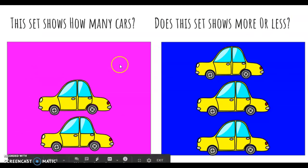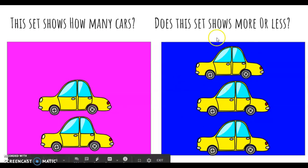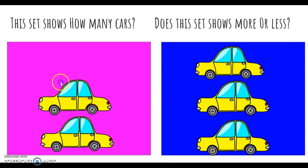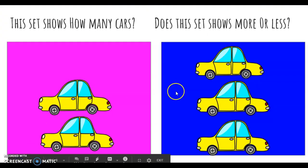Alright, so let's do this one together. This set shows how many cars, so let's count — one, two. Now let's look at the blue square. Does this set show more or less compared to the pink square? Yes, there's more. How do you know? Well, if you count one, two, three, you can notice there are more cars than the pink square, because the pink square only has one, two. Even when you look at them, you can see that the blue square has more cars. Great job.